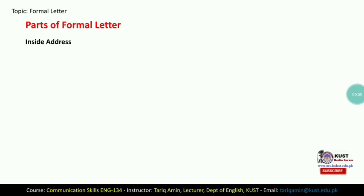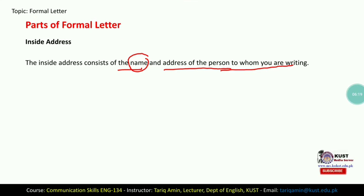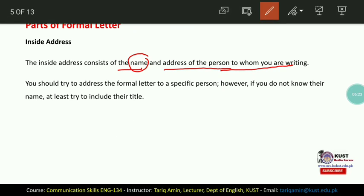The second part of the formal letter is the inside address. The inside address consists of the name and address of the person to whom you are writing — it includes the name and address of the receiver. You should try to address the formal letter to a specific person and know his or her name. However, if you don't know their name, at least try to include their title.